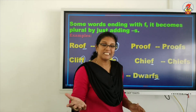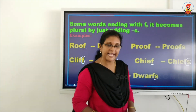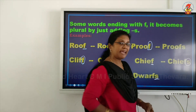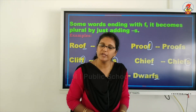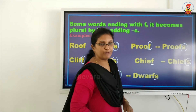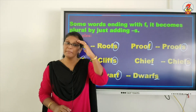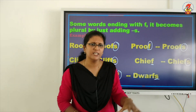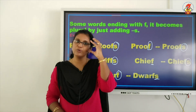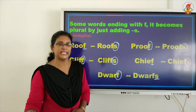Then we have wife — we have E after the F. So we take both together and throw them. In the place of F-E we write V-E-S.